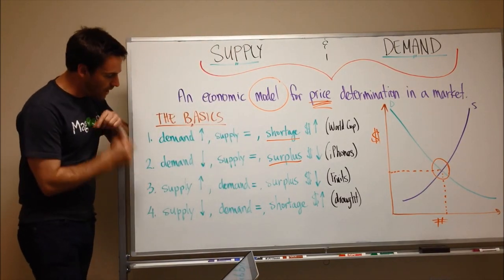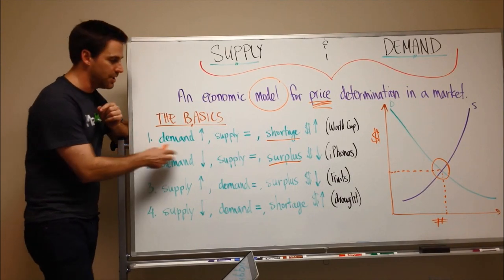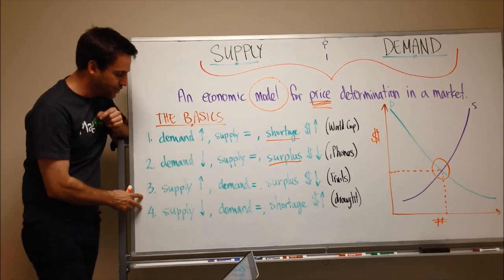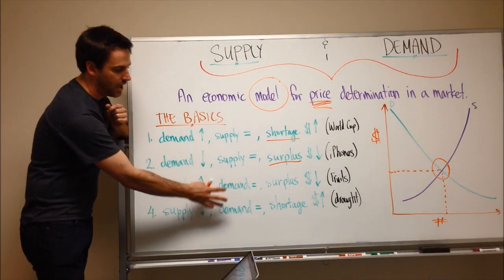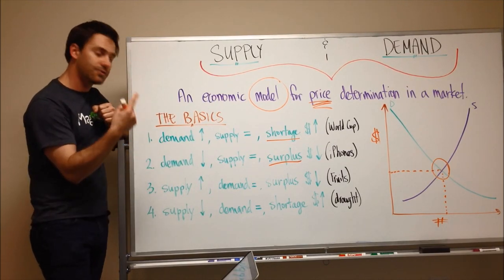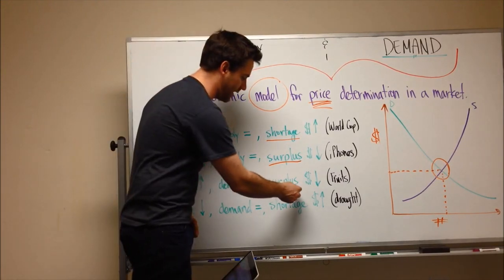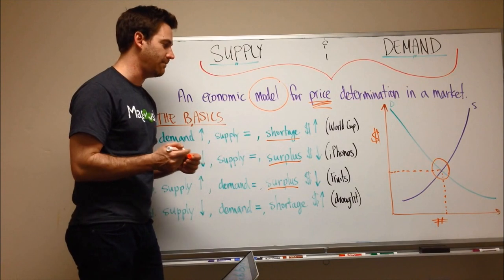The third basic concept, so now these two were when demand changed and supply remained the same. These last two are about supply changing and demand remaining the same. So number three, supply goes up, demand remains the same, and what you're going to have is a surplus again, and the price will drop.